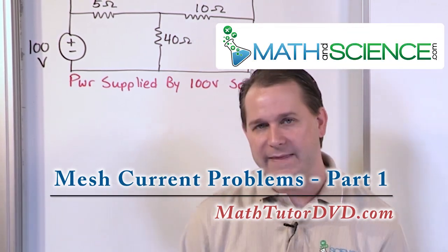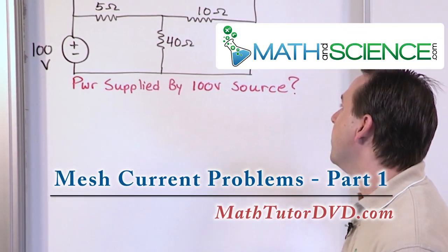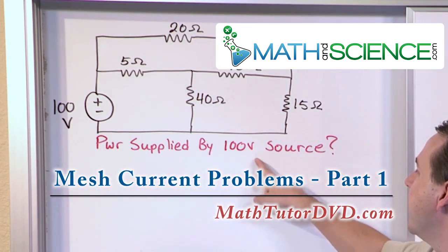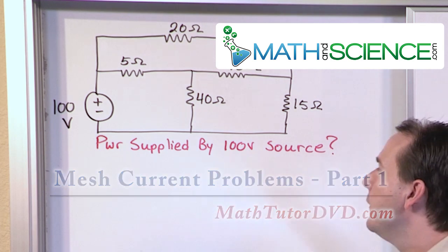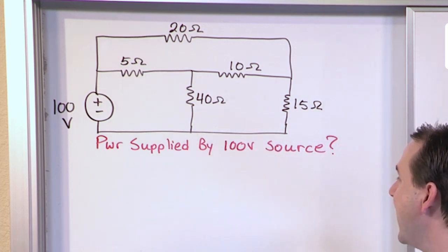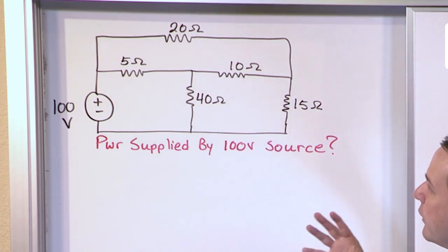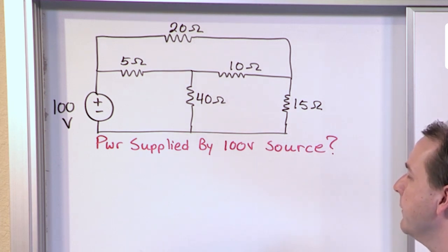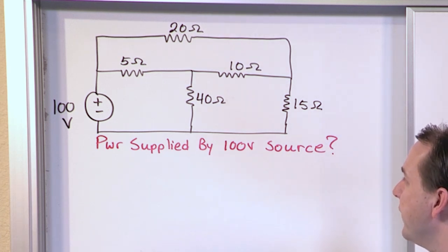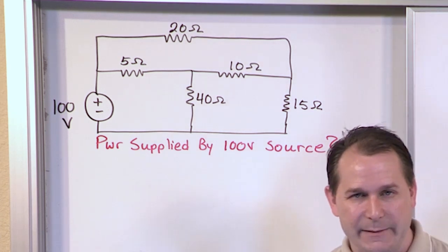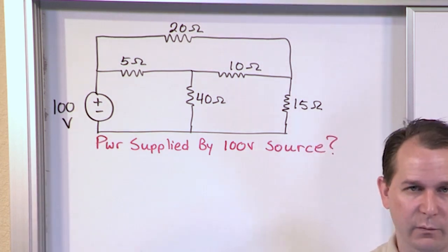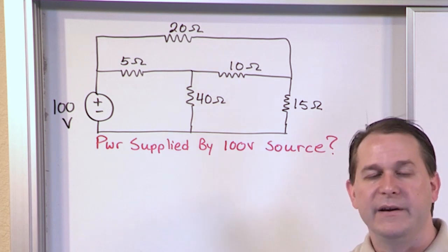Here we're going to use the mesh current method to solve this problem on the board. Simply stated, the goal is to find the power supplied by the 100 volt source. We have a 100 volt source and a resistor network. If we're trying to find the power supplied by the source, we need to know the current flowing through that source, and then we do I times V to get the power.